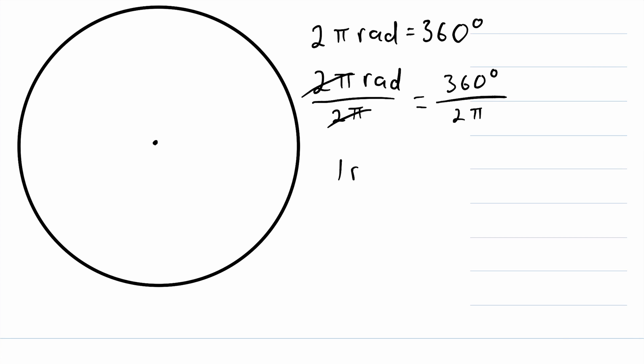So on the left side, we have 1 radian. And what's that equal to? Well, over here, we have 360 degrees over 2π. 360 divided by 2, I know that's just 180. So this is equal to 180 degrees divided by π. And we could write this slightly differently. Instead of 180 degrees over π, I'm going to write 180 over π degrees. So really, this is it. This is the conversion from radians to degrees.